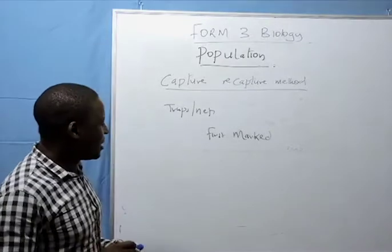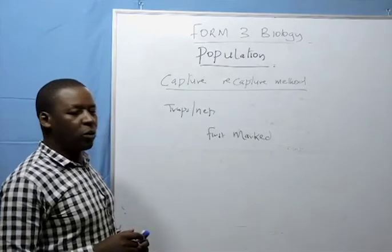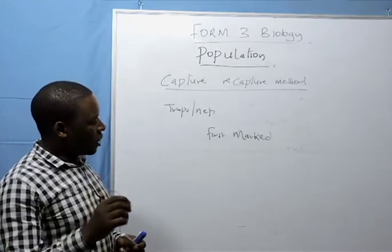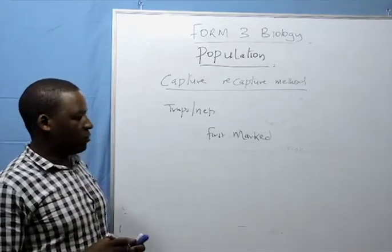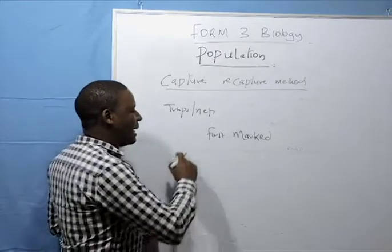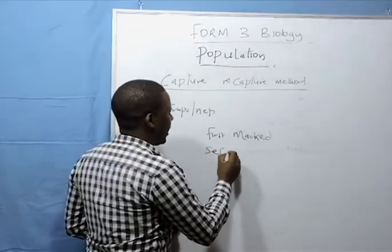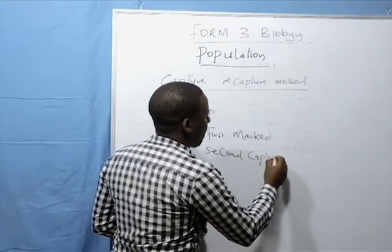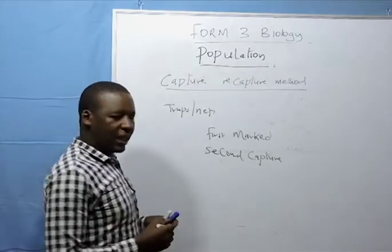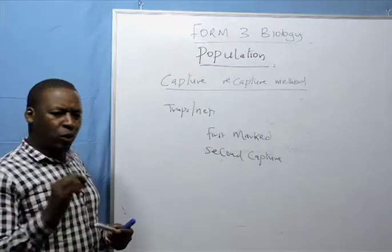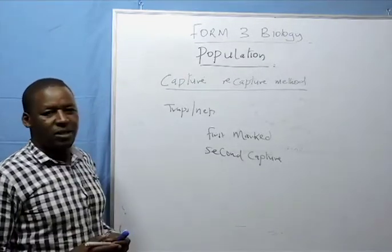After 24 hours, you set the nets again in the same fish pond. Count the number of fish that have been caught. The number that is caught the second time, you call it second capture. Within the second capture, there are those organisms that have a mark from the first capture.